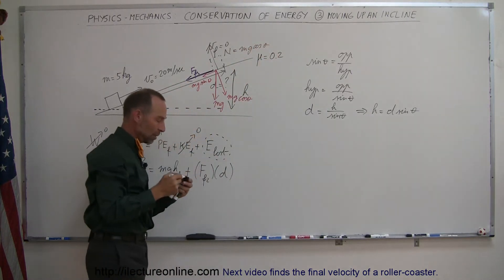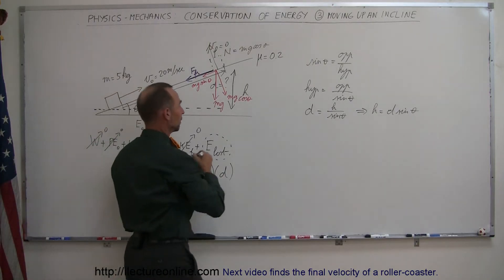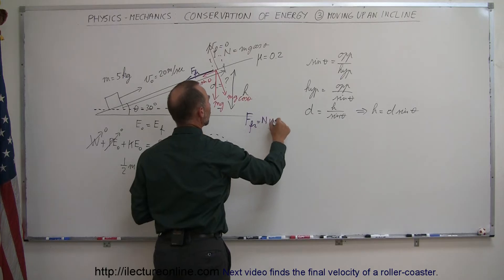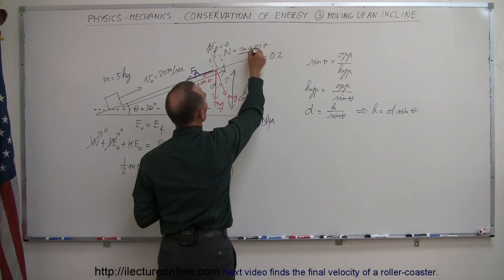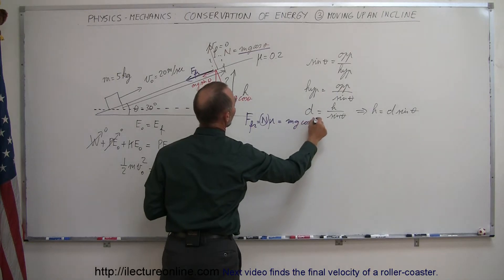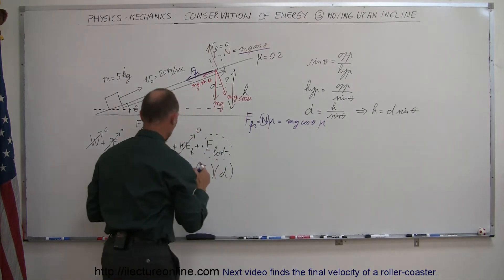And finally, we then know that the friction force, by definition, force friction, which is equal to the normal force times mu. And since the normal force is equal to this, we can say that it's equal to mg cosine theta times mu.